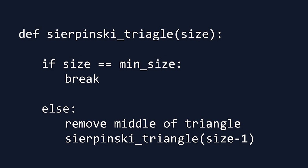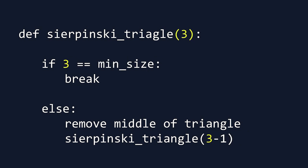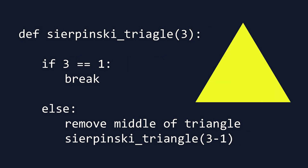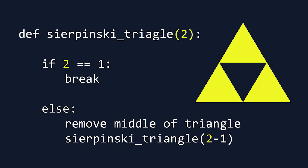If we ran the function with a starting size of 3 and a min size of 1, the computer would start with this triangle of size 3 and remove the middle of it, which would create 3 new triangles all of size 2. Then the function runs again, but this time operates on all of the size 2 triangles, removing their middles.